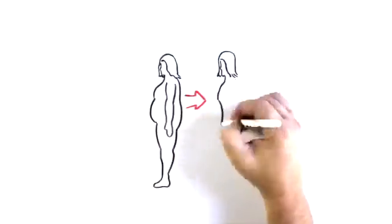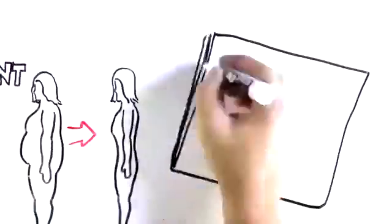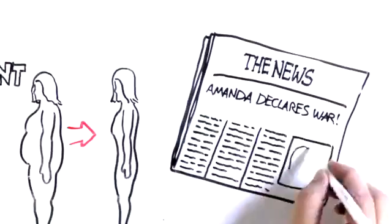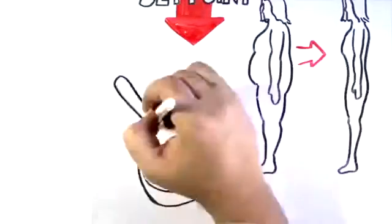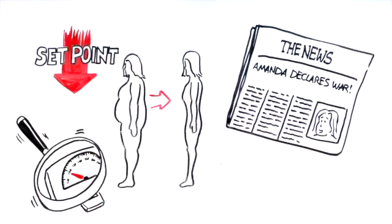For Amanda to lose weight and keep it off, she needs to find a way to lower her set point. That is, rather than declaring war on her own biology, she needs to find a way to make her body regulate itself to a new, lower weight.